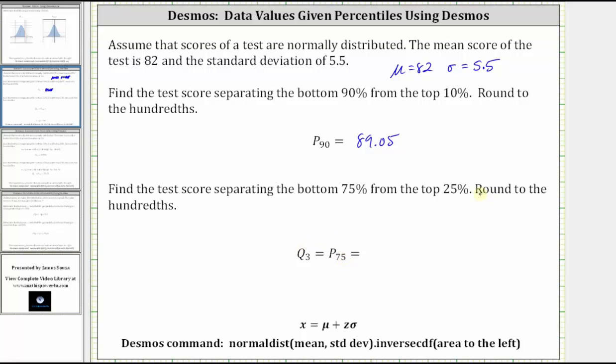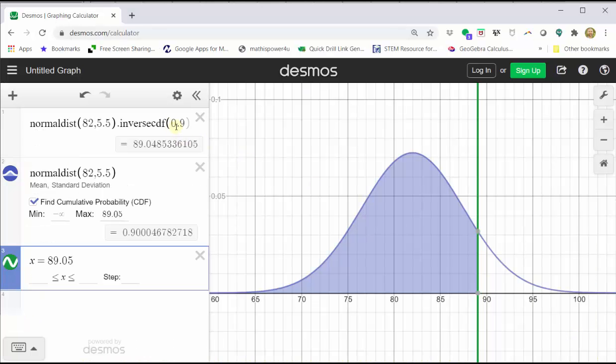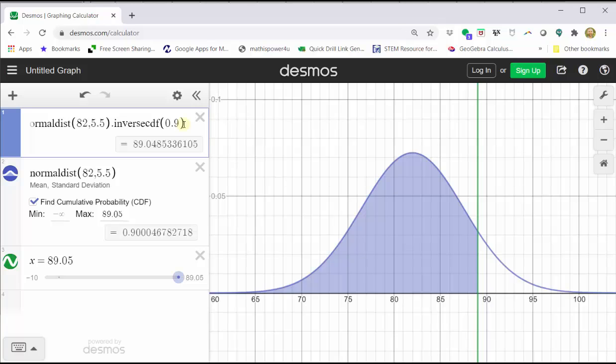And again, we're told to round to the hundredths place value. So going back to Desmos, we now just need to change the 0.9 to 0.75 in cell one. And the third quartile or 75th percentile shows below, which is approximately 85.71.